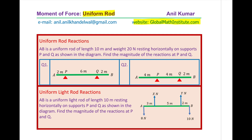We are considering a uniform rod. There are three examples to consider. The basic idea is to understand the concepts. In questions one and two, we are taking a uniform rod and working on the reactions. In question three, we will take a uniform light rod. The light rod means the weight is neglected.